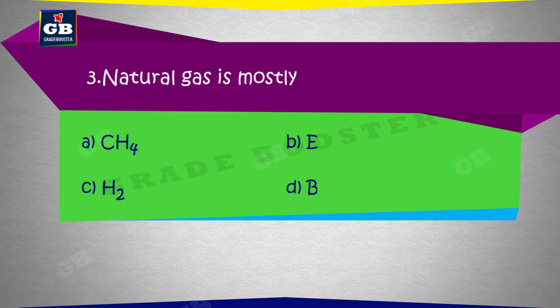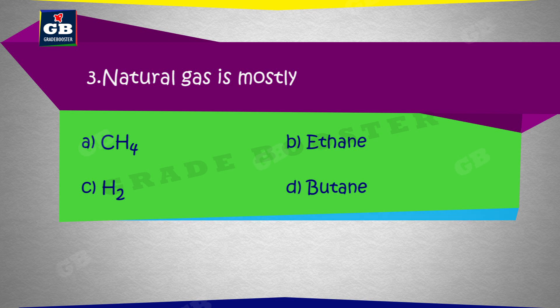Natural gas is mostly: A. CH4, B. Ethane, C. H2, D. Butane.